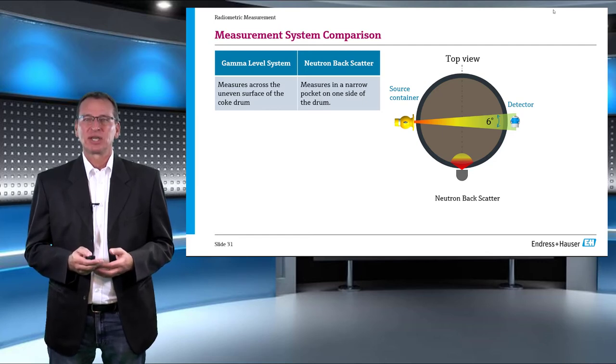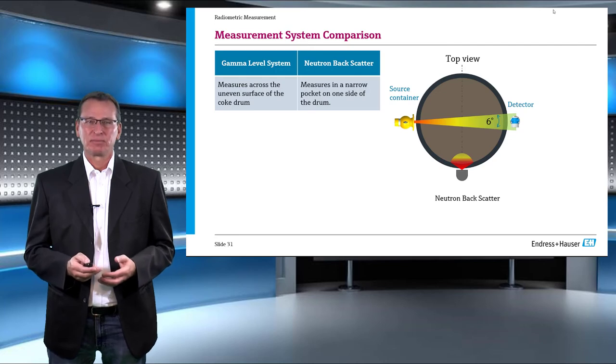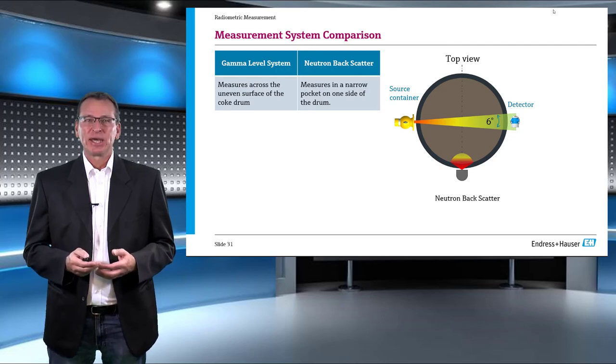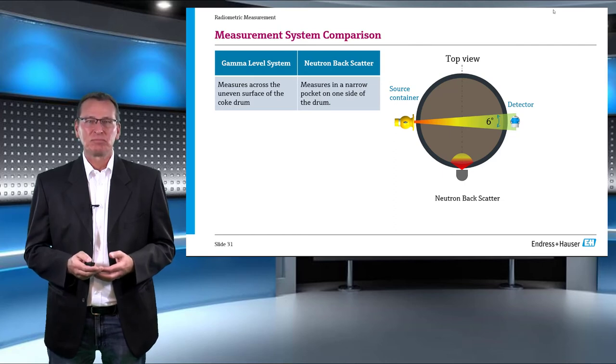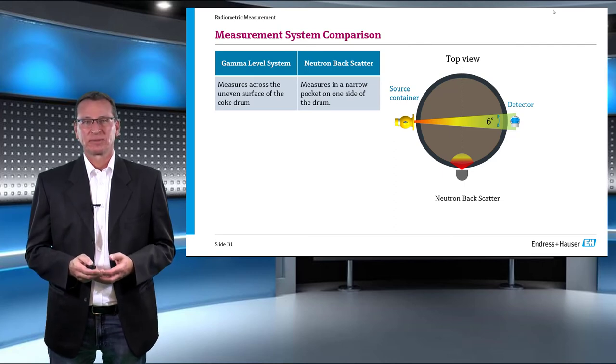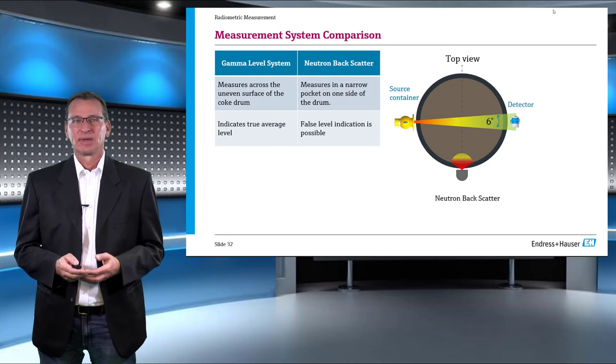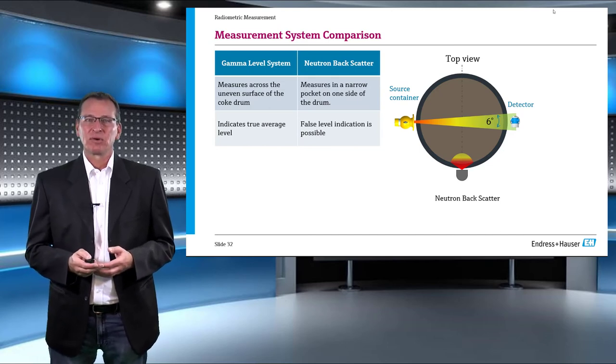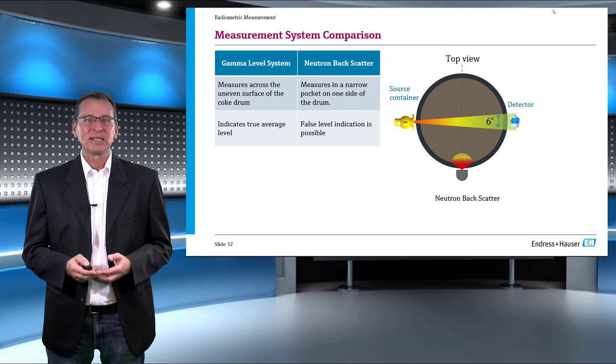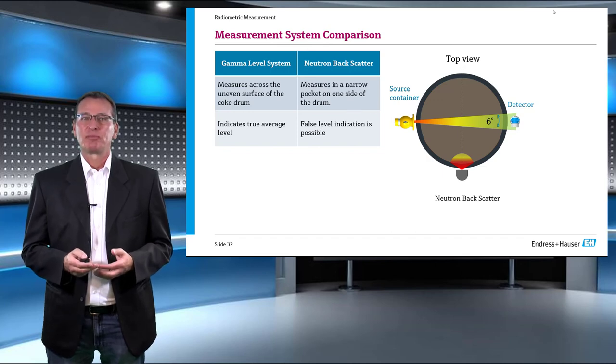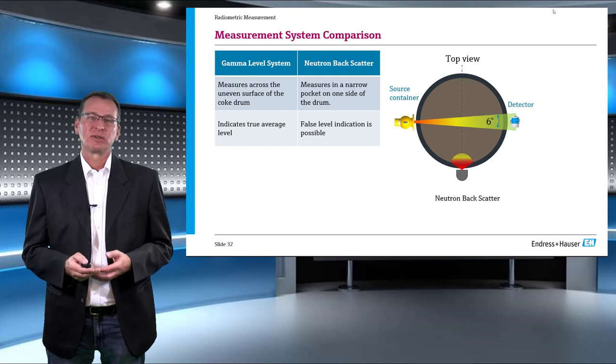The gamma system therefore gives the true average value of the level inside the drum, whereas the probability of indicating a wrong level is high in a backscattering system.